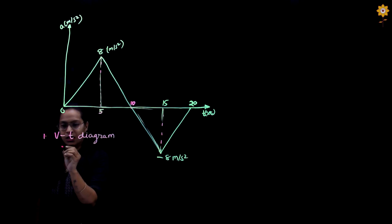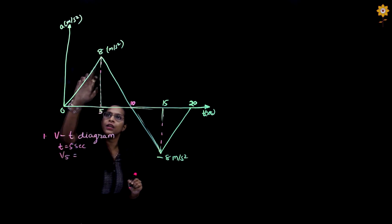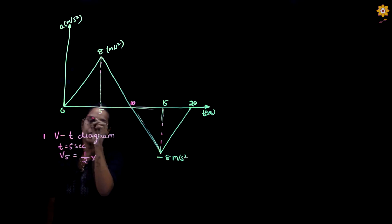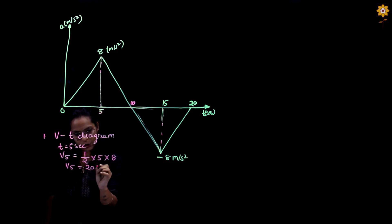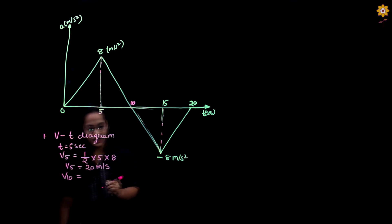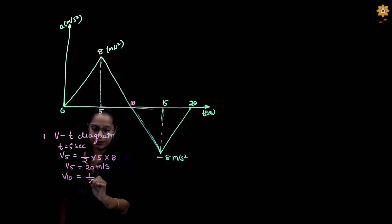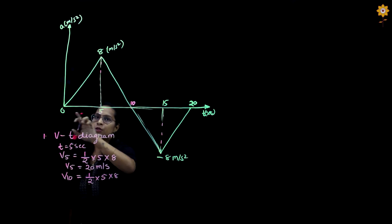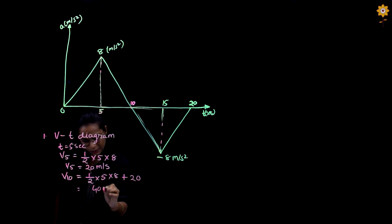Starting from T equals 5 seconds: V at 5 would use the area under the AT curve, which is a triangle. So that would be 1/2 × base 5 × height 8, giving V5 equals 20 meters per second. Next, V at 10: it is again a linear graph forming a triangle, so that would be 1/2 × base 5 × height 8, but the initial velocity from 0 to 5 is plus 20. So that gives us 40 meters per second.